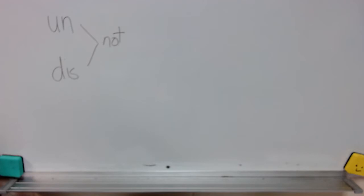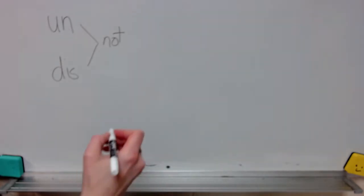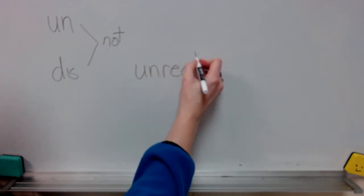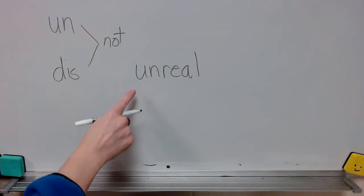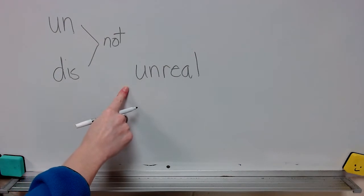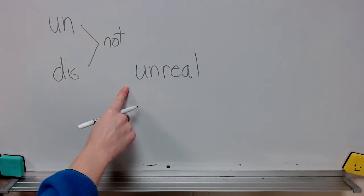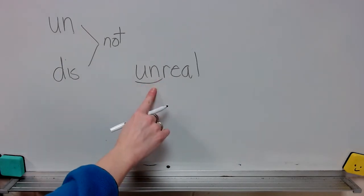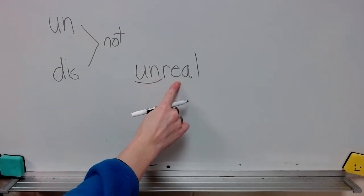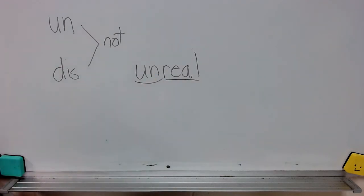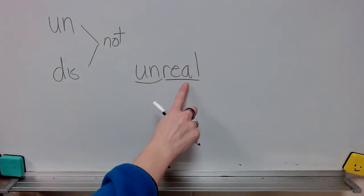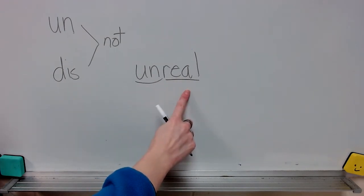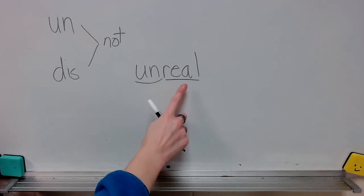So let's talk about if you come to a word that maybe you aren't sure of the meaning or that you don't know how to pronounce. I can recognize that there is a prefix here, and I know that prefix is un. And then I see that the base word is real. So I know that un means not, so when you add that to this base word, that means unreal means not real.